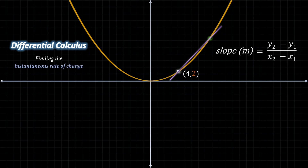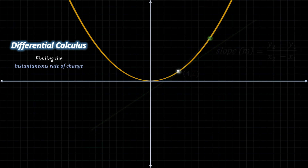But does this accurately depict the slope of our point of interest, represented by the imaginary green tangent line? Not at all — the two lines are definitely different, and the slopes of these two lines are very different as well. So what do we do now?